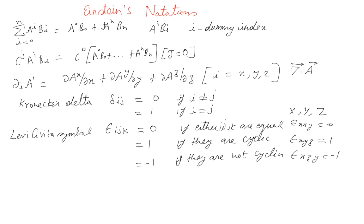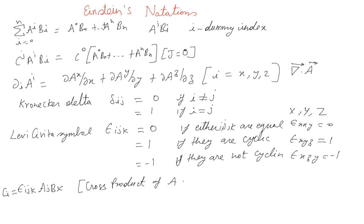We are going to encounter these two symbols very often and will understand more about them. For now they are just defined symbols. As an example, epsilon_ijk A_j B_k gives C_i, and if you look closely, this is nothing but the cross product C = A cross B, giving you one component at a time as i varies over x, y, z.